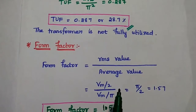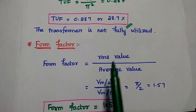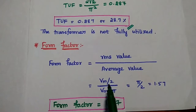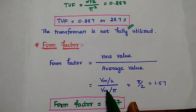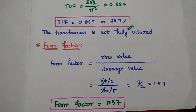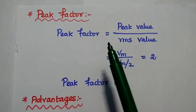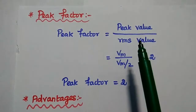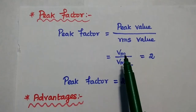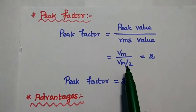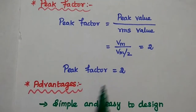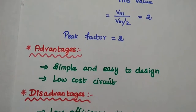Next, the form factor is the ratio of the RMS value to the average value. Substituting Vrms = Vm/2 and Vdc = Vm/π, the form factor = (Vm/2)/(Vm/π) = 1.57. The peak factor is the ratio of the peak value to the RMS value. Substituting peak voltage Vm divided by Vrms = Vm/2, the peak factor = 2.